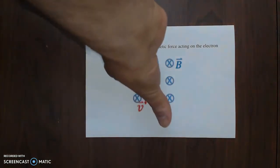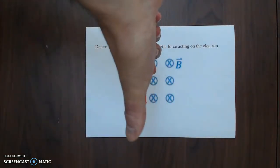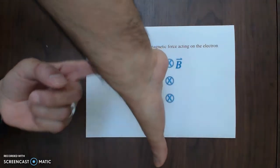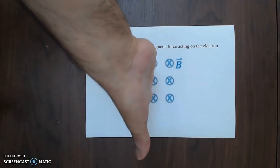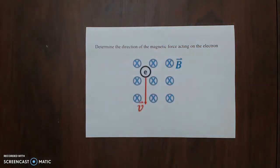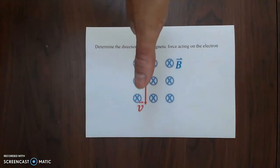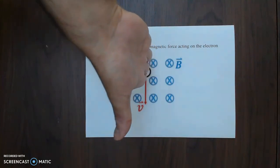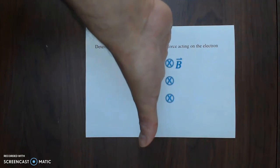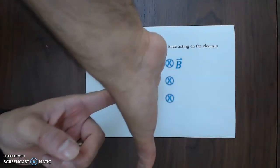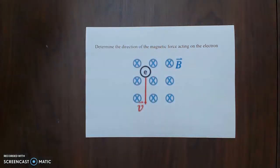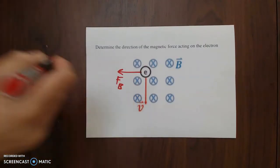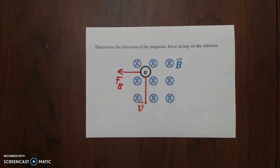My thumb is going downward to the south. My four fingers are going into the page. The back of my hand is pointing to the west or to the left. Once more: thumb going downward with the velocity to the south, fingers going into the page away from me. Since it's an electron — a negative charge — I use the back of my hand, pointing to the west or left. That is the direction of the magnetic force acting on this electron.